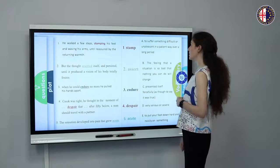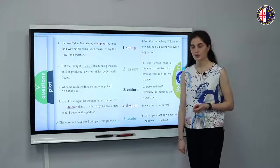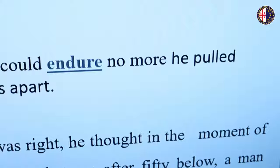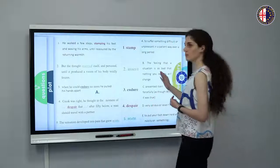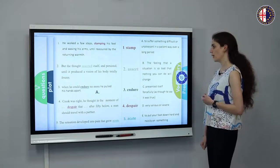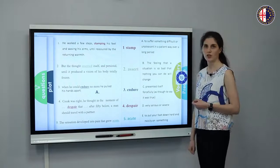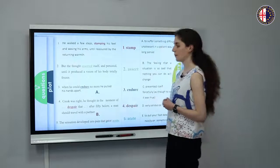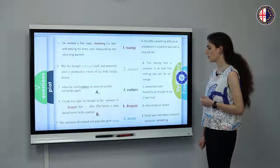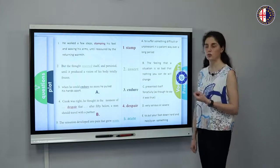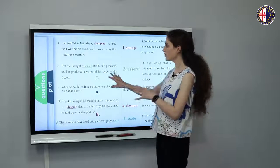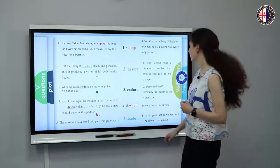Let's look at the definitions now. A: to suffer something difficult or unpleasant in a patient way over a long period of time. This must be the third sentence — 'when he could endure no more.' Now let's look at B: the feeling that a situation is so bad that nothing you can do will change it. This must be 'a moment of despair.' Let's look at C: presented itself forcefully, as though to say it was true. This must be 'asserted.' 'Asserted itself' might also mean to claim something, however in this context it means to present itself forcefully.